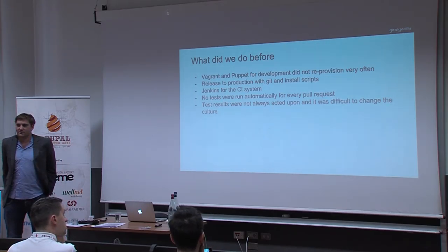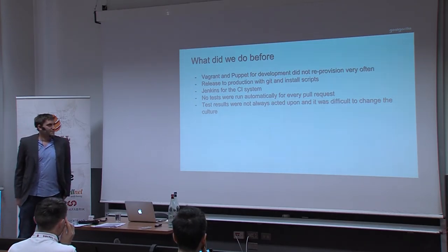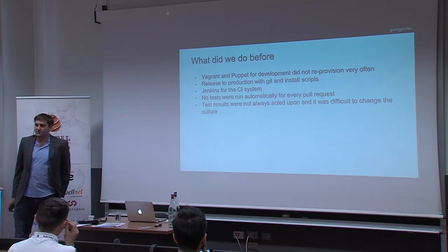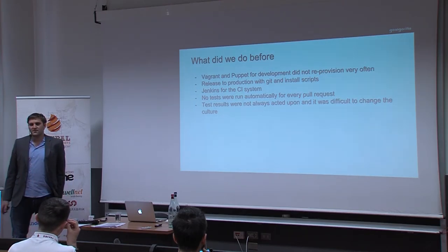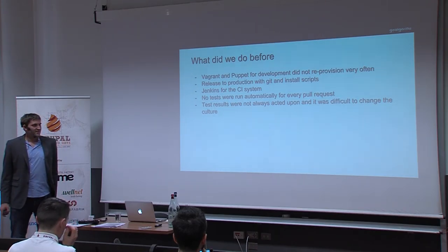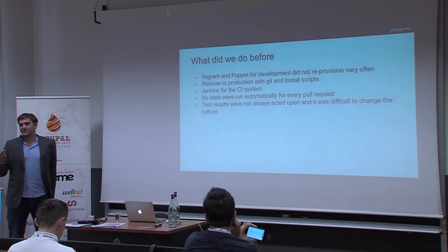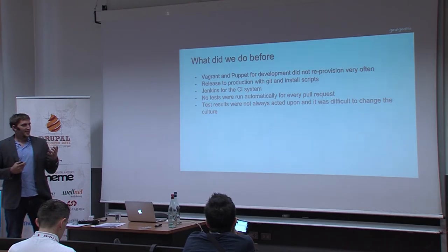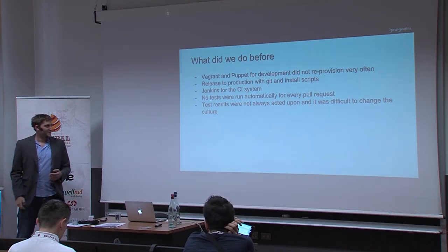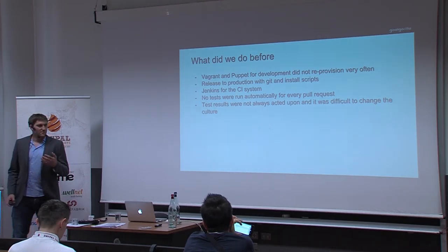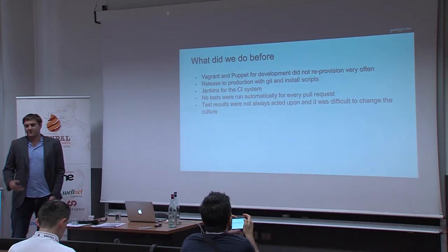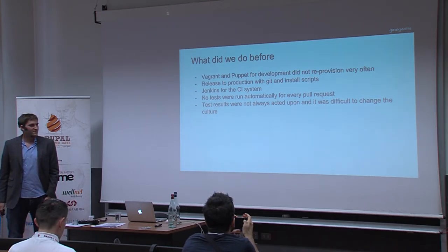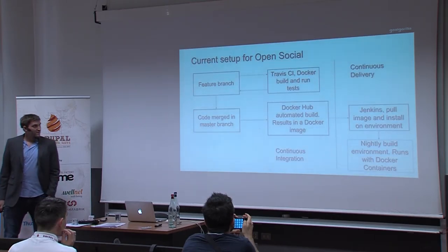We released to production with Git and install scripts, and used Jenkins for CI — running tests every night on the master or develop branch, but not on every pull request. We found it was very difficult to get people to act on failing tests because it wasn't clear who caused them. When several tests were failing it became even harder to fix, no one was really doing it, we accumulated failing tests, and then had to spend a lot of time fixing them much later.